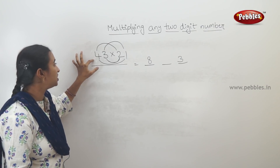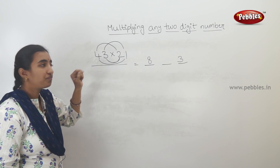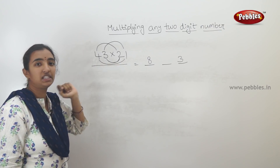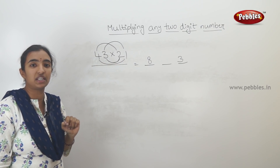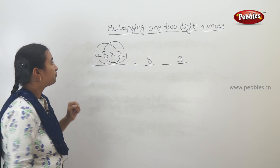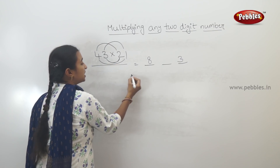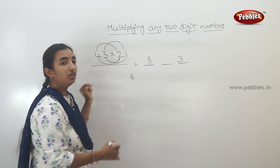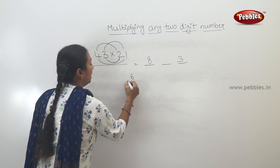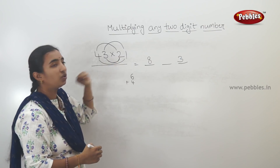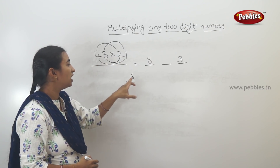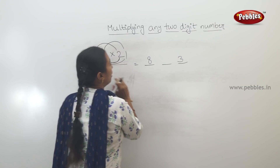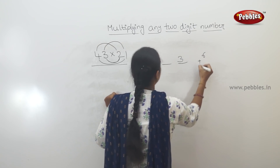The second step involves the first number and the last number — multiply and add. So, 3 into 2 is 6, and 4 into 1 is 4. How do you do 3? 6 plus 4.